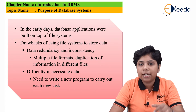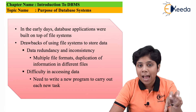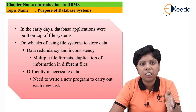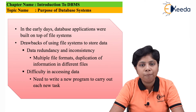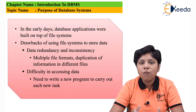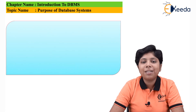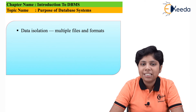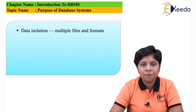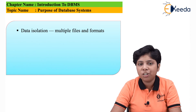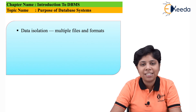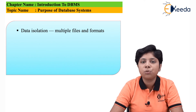If another constraint is added — say, students with credit hours of 60 who are also located in a particular postal code — we again have to make another application program, fetch all the data from each department, and sort it again. This makes data access very inconsistent and difficult in file-type processing. The next problem is data isolation. Since all information is stored in separate files, the data is isolated and scattered throughout the files. Updating a particular piece of data means updating it in many different files, and this isolation can cause serious problems to the system.